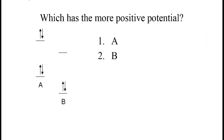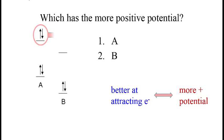If we were to ask which has the more positive potential, we need to remember that the material that is better at attracting electrons would have the more positive potential. In this case, the two electrons in question would prefer to go to B. B would be better at attracting them, so B would have the more positive potential.